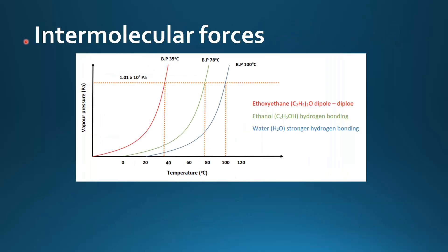Next we'll have a look at the effect of intermolecular forces on vapor pressure. On this graph we have ethoxy ethane, ethanol, and water. Ethoxy ethane has dipole-dipole attractions between the molecules. Ethanol has hydrogen bonding between the molecules. And water has stronger hydrogen bonding between the molecules. Here we can see the effect of these intermolecular forces on the boiling point.